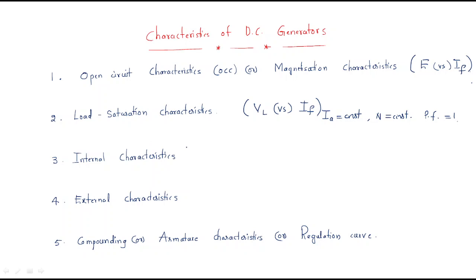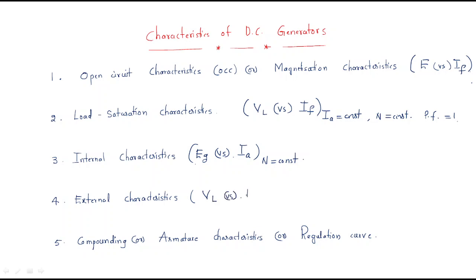Next are internal characteristics: internal EMF versus armature current. This gives the internal characteristics, and here we should maintain speed constant. Then external characteristics: load voltage versus load current — these are the external characteristics.